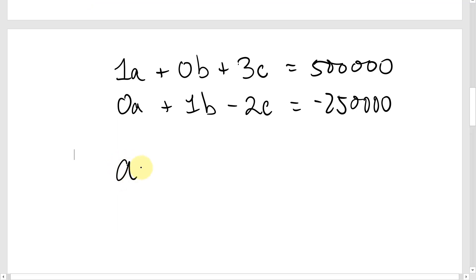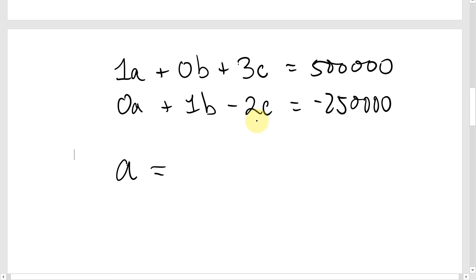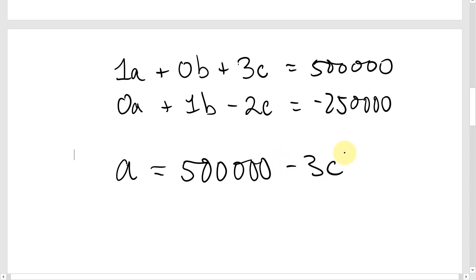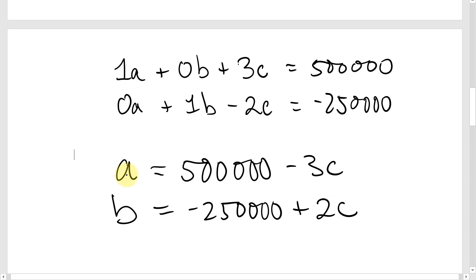We can solve for A and B in terms of C. The standard approach is to make C the free variable. From the first equation: A = 500,000 − 3C. From the second equation: B = −250,000 + 2C. So if we know the value of C, we can find both A and B — A and B really depend on C.